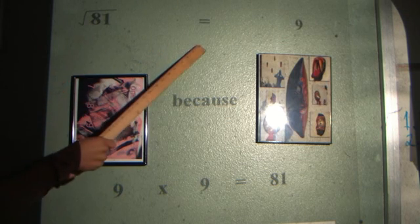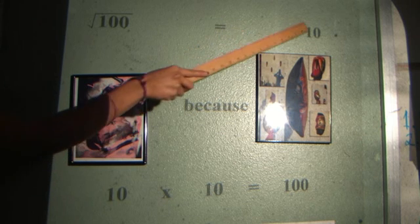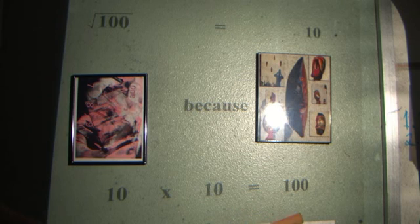The square root of 81 equals 9, because 9 times 9 equals 81. 10 times 10 equals 100!